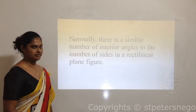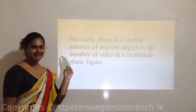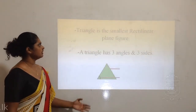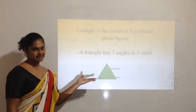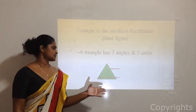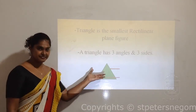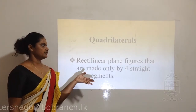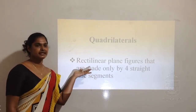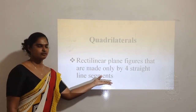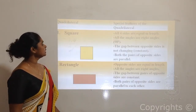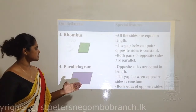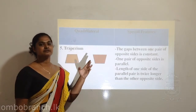We came to know the special features of rectilinear plane figures - what is a side and what is an angle. We also learned that the number of angles in rectilinear plane figures is similar to the number of sides. The smallest rectilinear plane figure is a triangle with three sides and three angles. Then we learned about quadrilaterals - rectilinear plane figures made with four straight line segments. We classified five types: square, rectangle, rhombus, parallelogram, and trapezium.